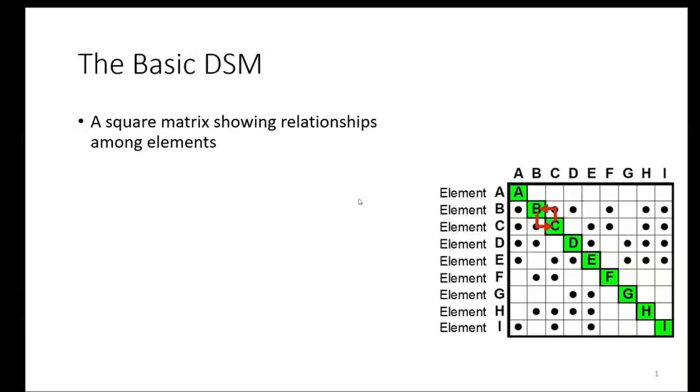Hopefully everyone can see this slide about the basic DSM. I'd like you to focus on first these diagonal elements in the square matrix. I just want to remind everyone that a DSM has the same number of rows and columns, always a square matrix.